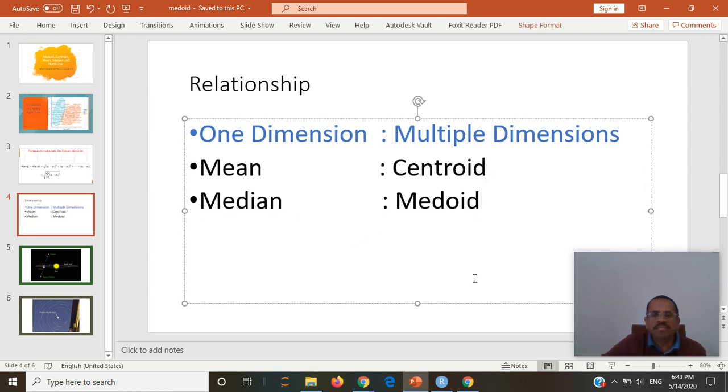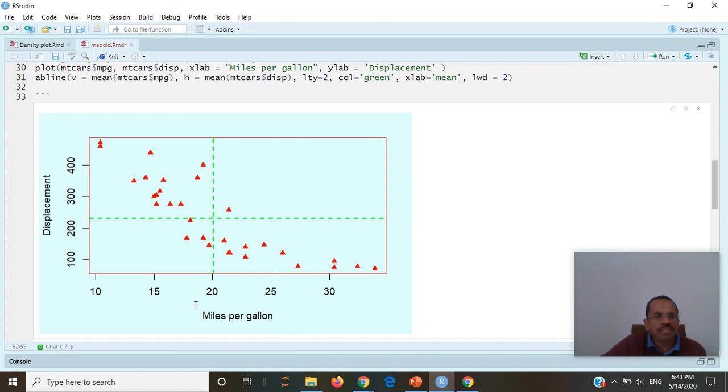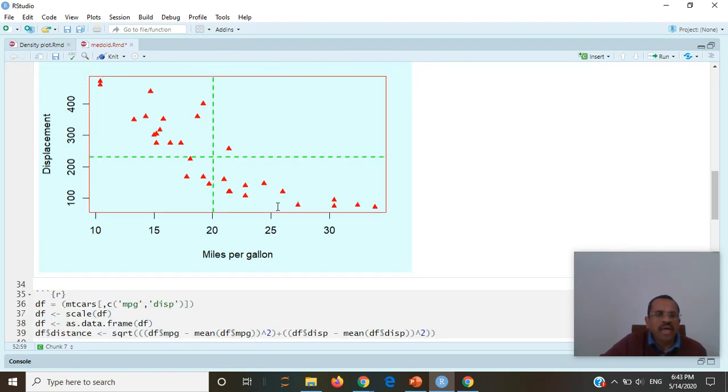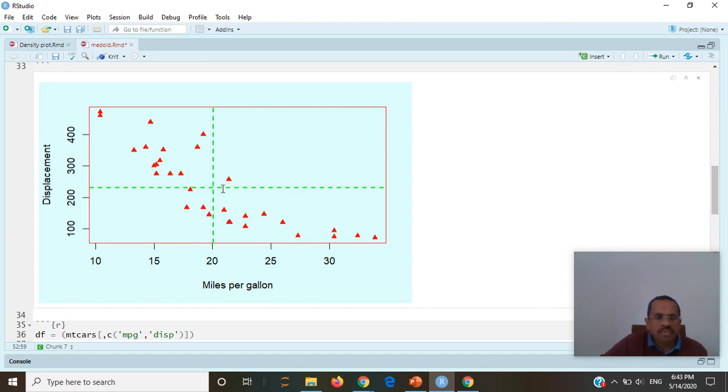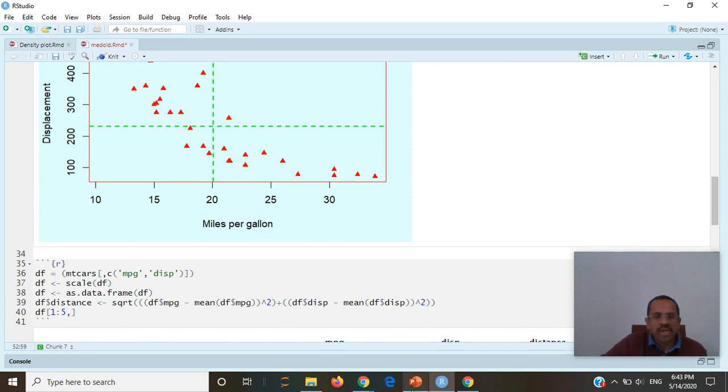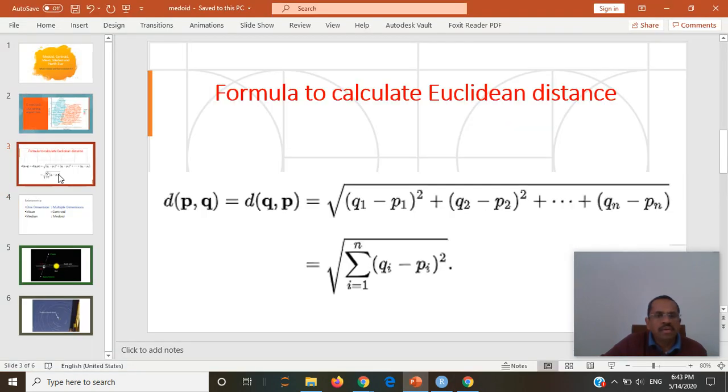This type of medoid and centroid can be calculated not only in two dimensions or three dimensions, but in multiple dimensions, even more than three. To calculate the medoid, we need this formula. This is called Euclidean distance. Euclidean distance is the direct distance between two points in all dimensions.